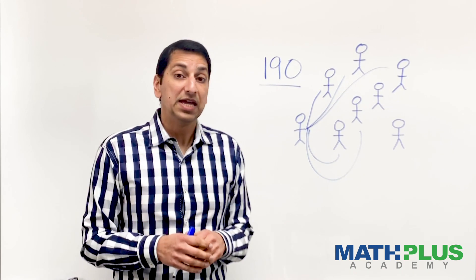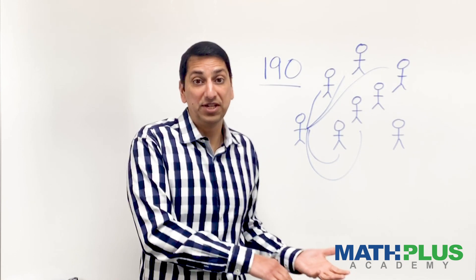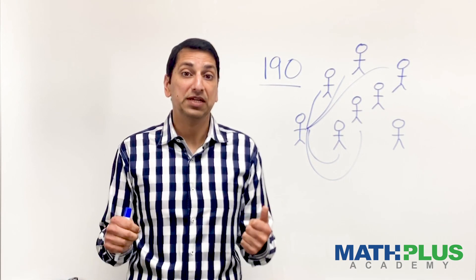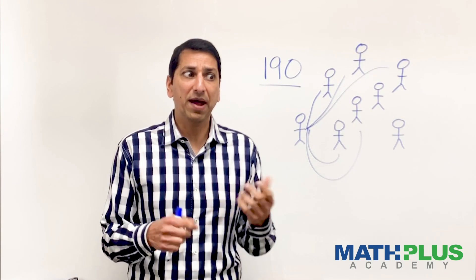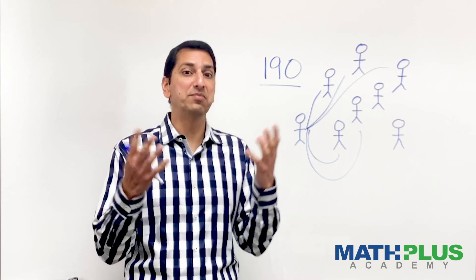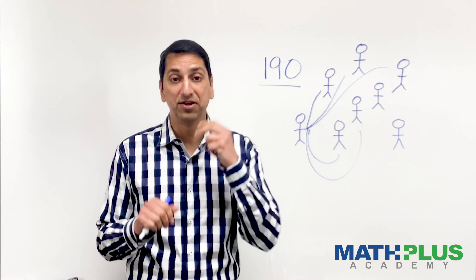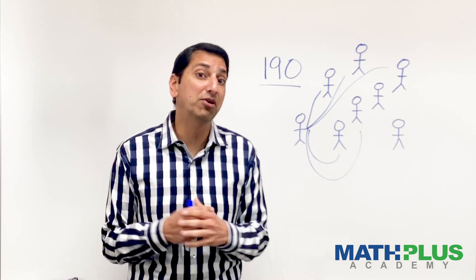Another thing would be if I told you the number of people, could you tell me how many handshakes there were going to be? If I said there's 23 people in the room and they all shake hands with each other exactly once, how many handshakes are going to be? Or what about 100 people or 1,000 people? Can you generalize it so if I gave you any number, you could kind of quickly calculate how many handshakes there were? So that's another thing that you could do for an extension.